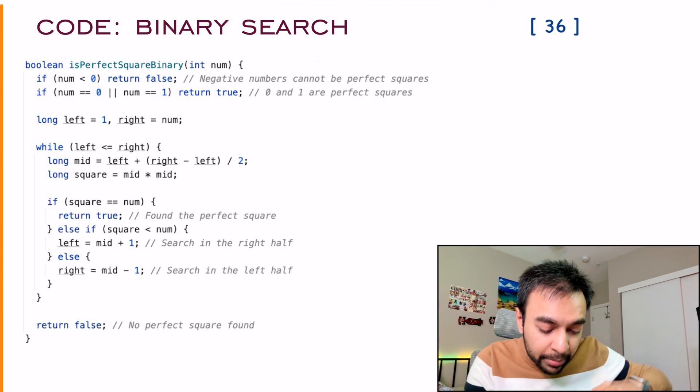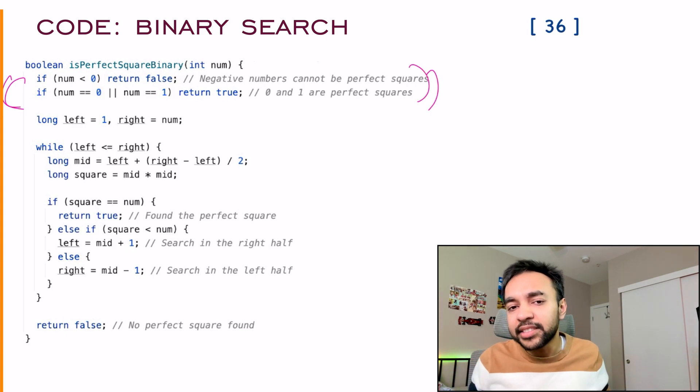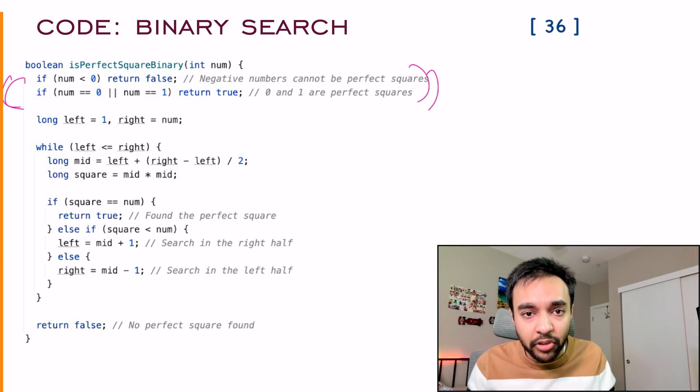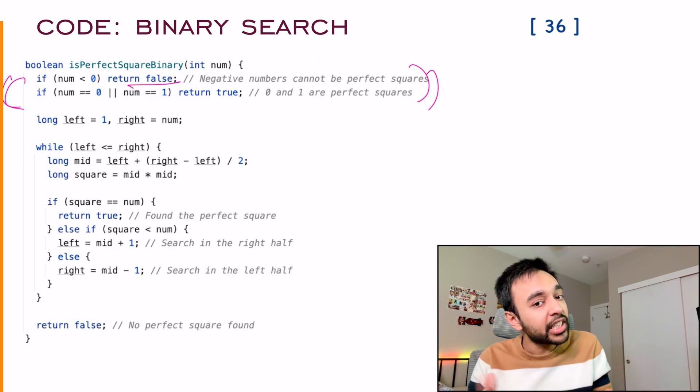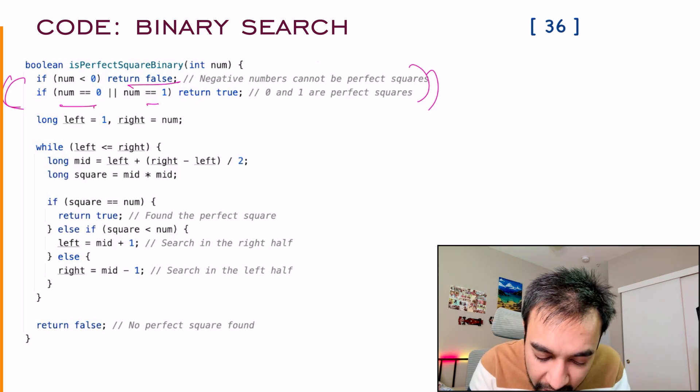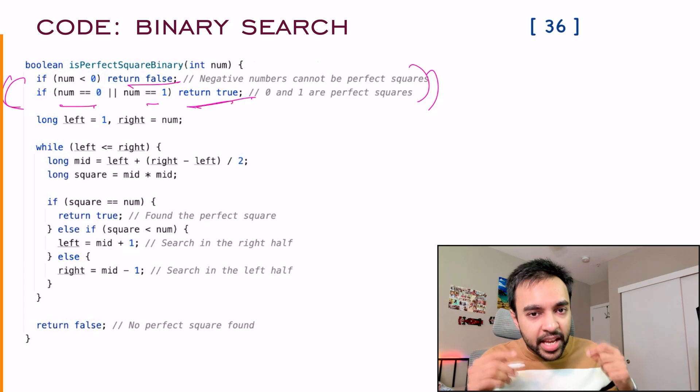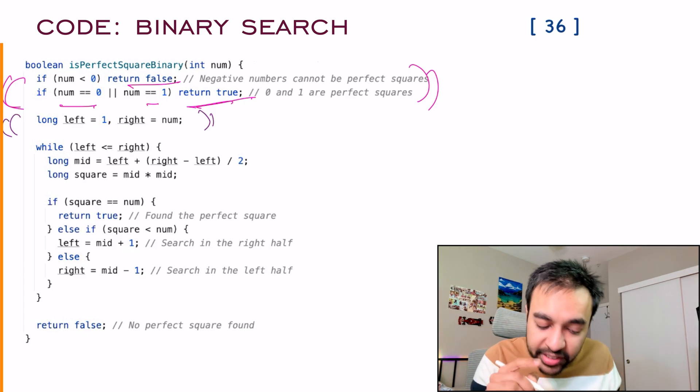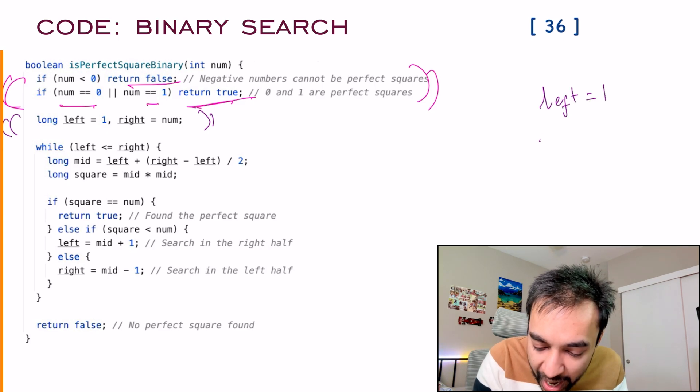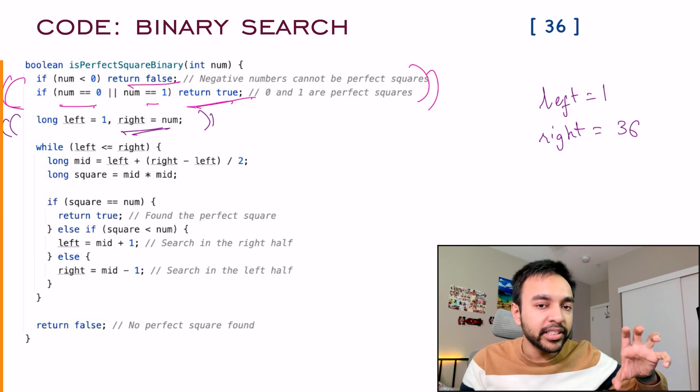So the first step that we do over here is we have some sanity checks that if the number is less than zero or it is zero or it is one, I can simply return some of the base cases. If it is zero, I return a false because negative numbers cannot be perfect squares. And if it is a zero or a one, I can simply return a true because they are already perfect squares. After this, I will start my binary search. The first thing that I do is I appoint a left pointer and a right pointer. Once you are done with this, the next part is pretty standard.